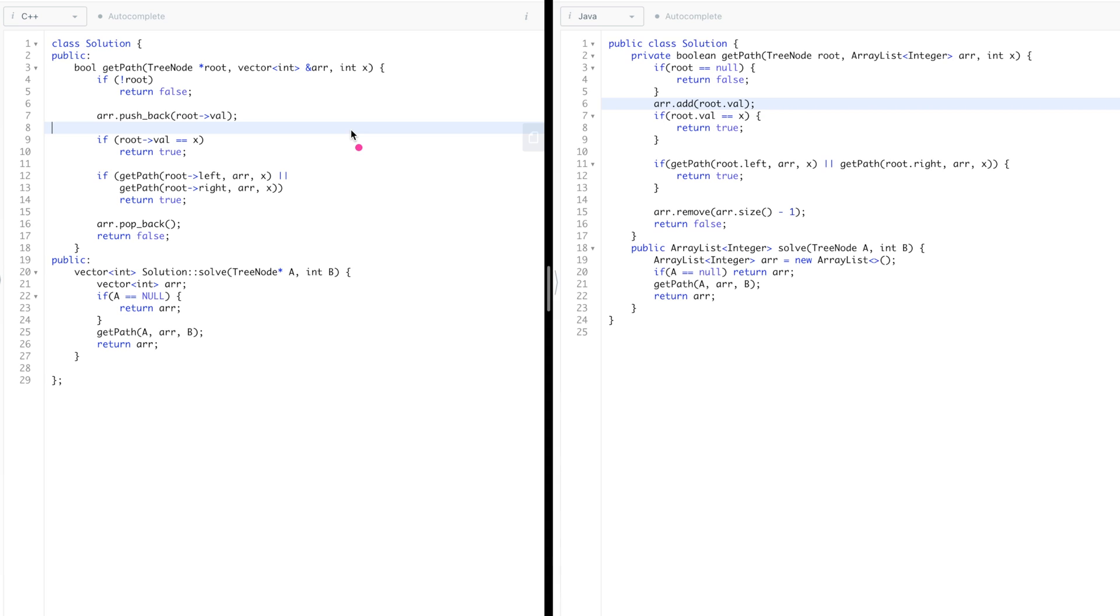So guys, as usual, the C++ code is on the left and the Java code is on the right. And they're extremely identical. So I'll just be telling you about the C++ code.